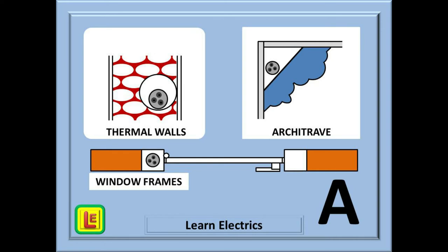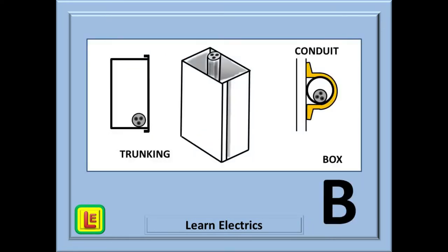Cables installed in trunking and conduit are generally reference method B. Think about this. Trunking is a square box shape. Conduit is a round box shape. That means that B is for box, round box or square box. Hopefully, this is making sense to you. In class at Learn Electrics, this is the moment when our students have a light bulb moment. Everything is dropping into place.